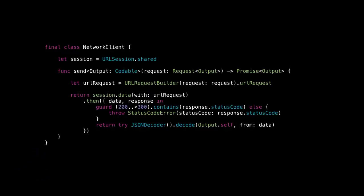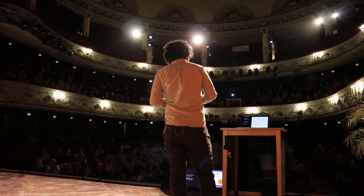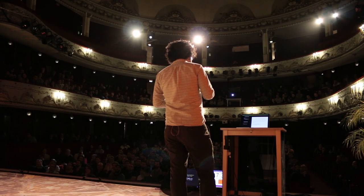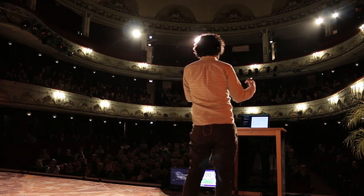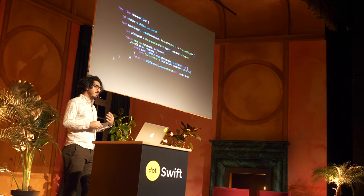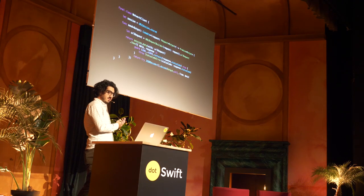This is a network client, and its job is to take a network request and send it and provide you with the result. There are a few things here — there's promises and there's generics. If you don't understand those things, that's okay. You can still get the gist of what the talk is about. The promises and generics just make the code a little bit easier to read.